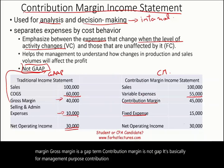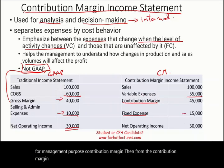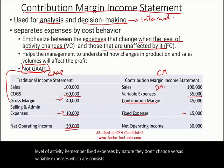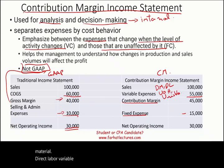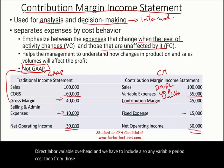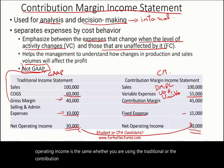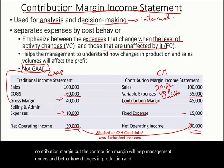From the contribution margin, we deduct the fixed expenses. Fixed expenses are unaffected by the level of activity — by nature they don't change. Variable expenses consist mainly of direct material, direct labor, variable overhead, and any variable period costs. After deducting fixed expenses, we arrive at net operating income. Notice that net operating income is the same whether you use the traditional or the contribution margin income statement.